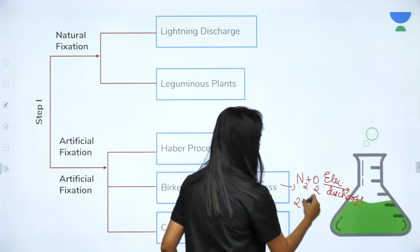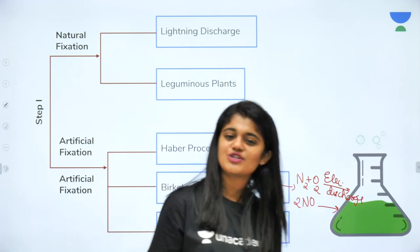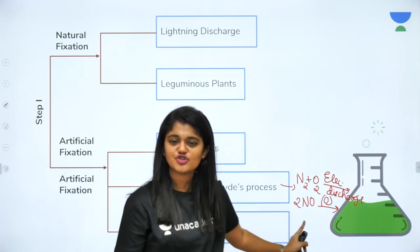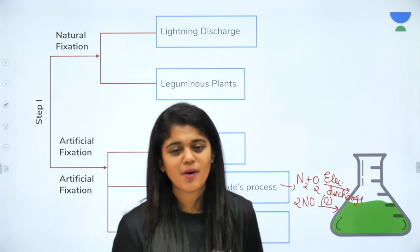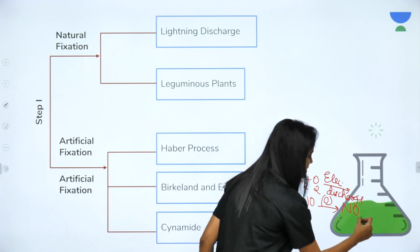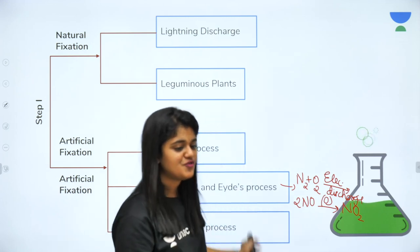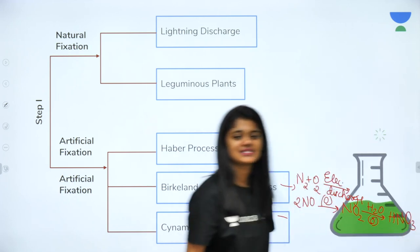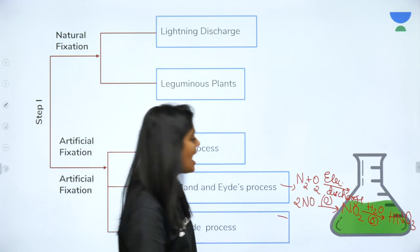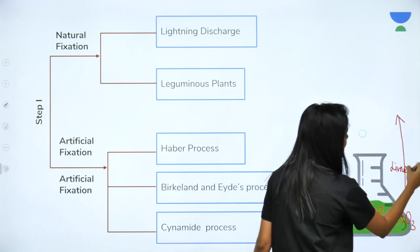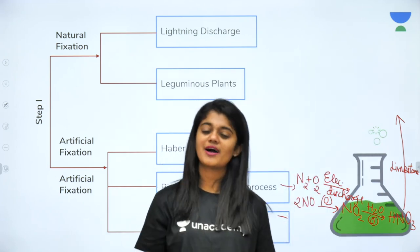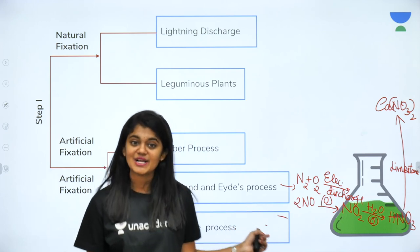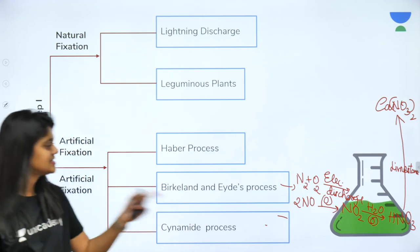Due to the electric discharge, N₂ and O₂ combine to form NO. Then by the action of oxygen present in the atmosphere, this nitrogen oxide gets oxidized to form a more stable oxide, that is NO₂. Further, NO₂ combines with H₂O and oxygen to give nitric acid.